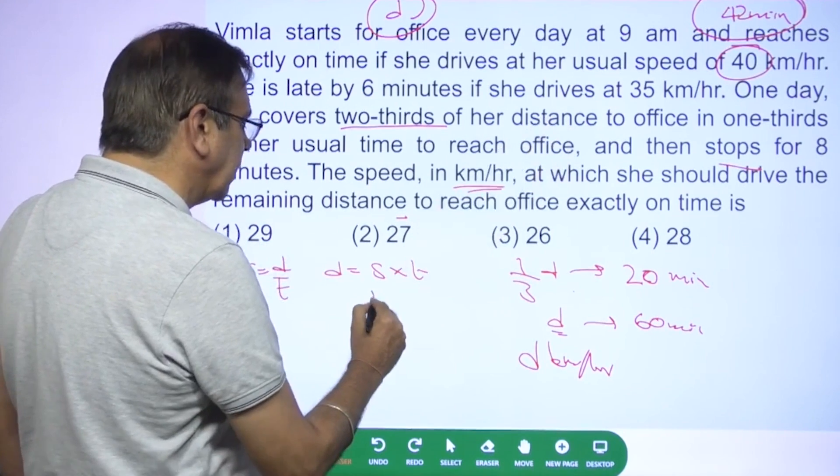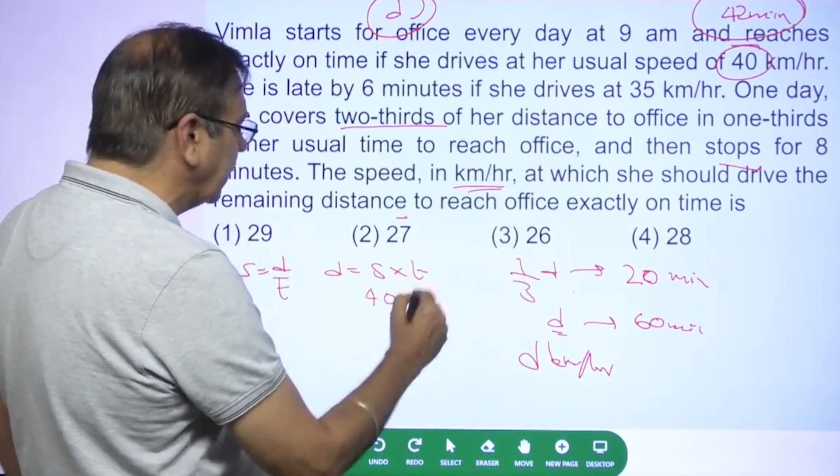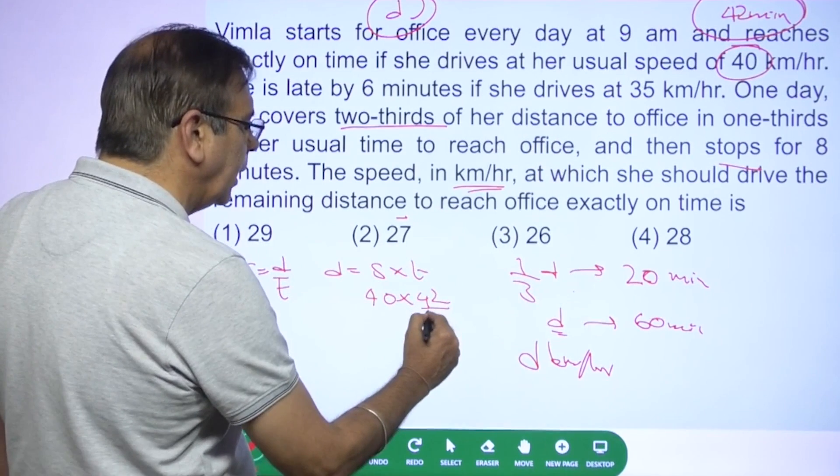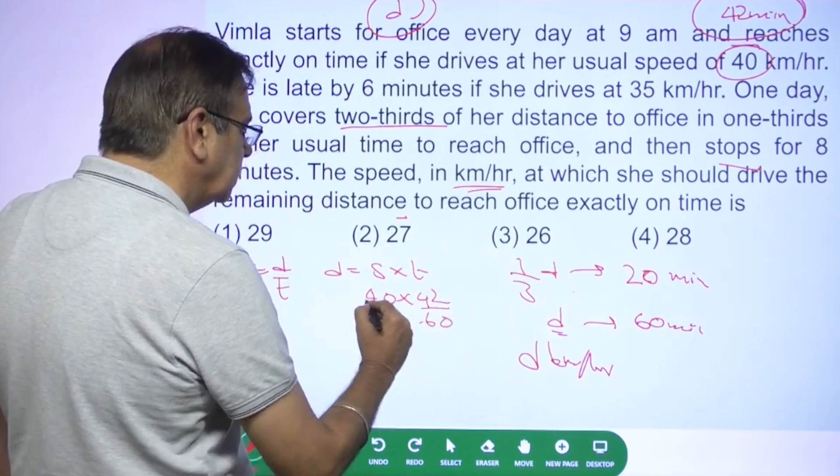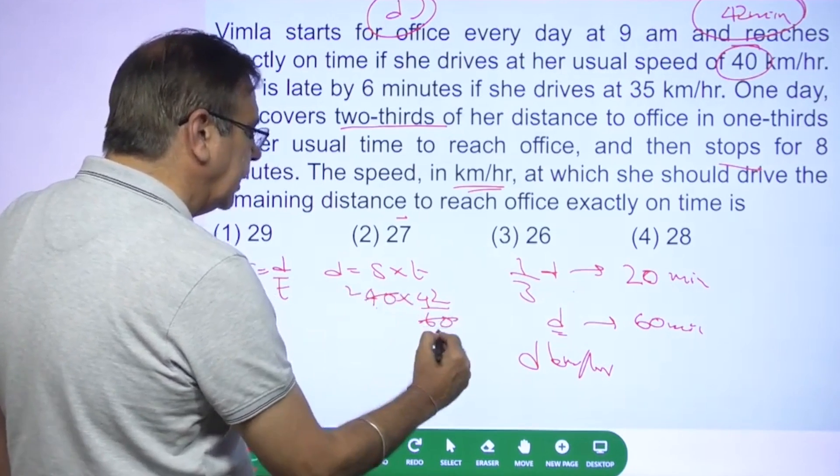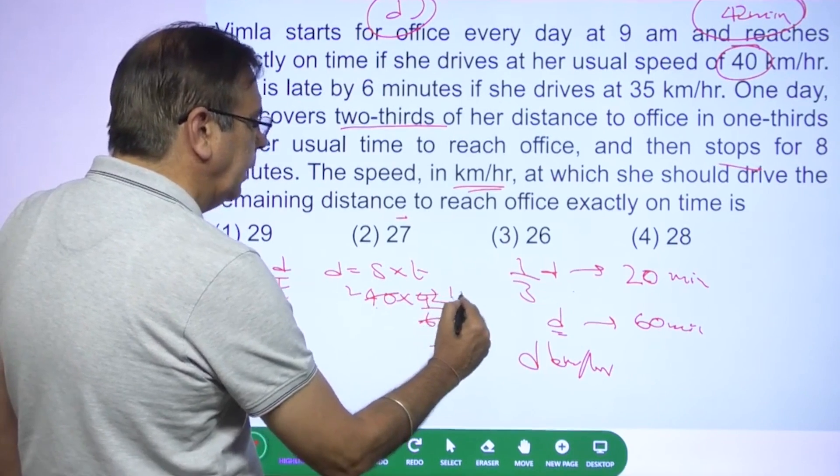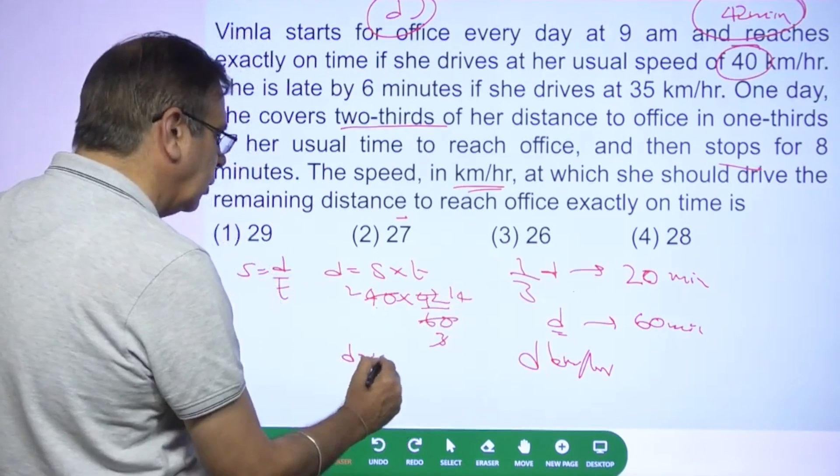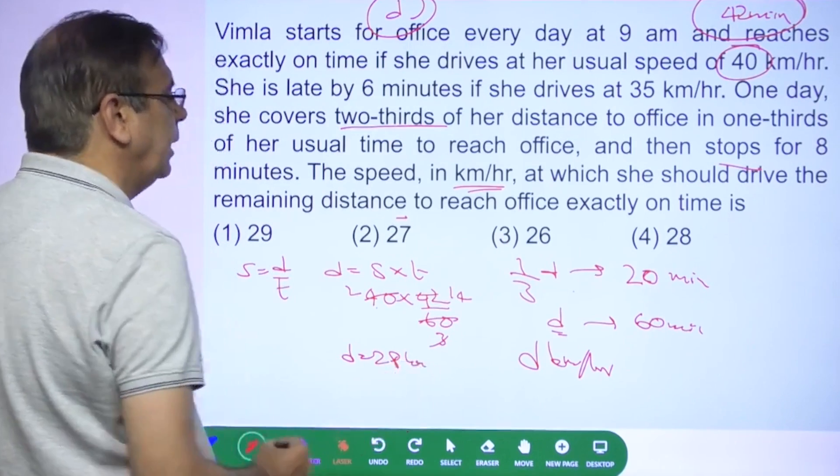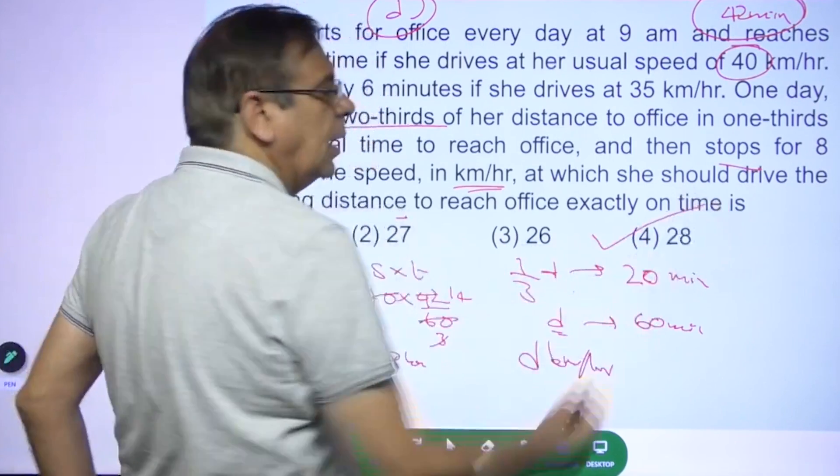What is the speed? 40 kilometers per hour. Time taken is 42 minutes. So in terms of hours is 42 by 60. 20 into 2, 20 into 3, 14, 14 to the 28. So distance is equal to 28 kilometers. So speed has to be 28 kilometers per hour.